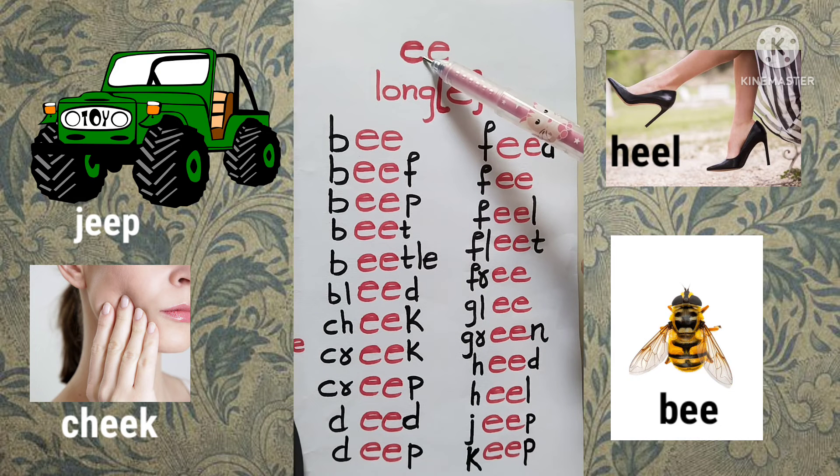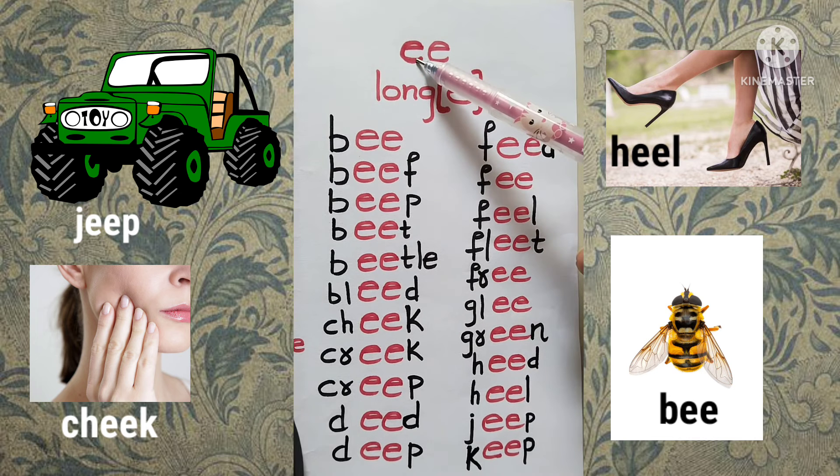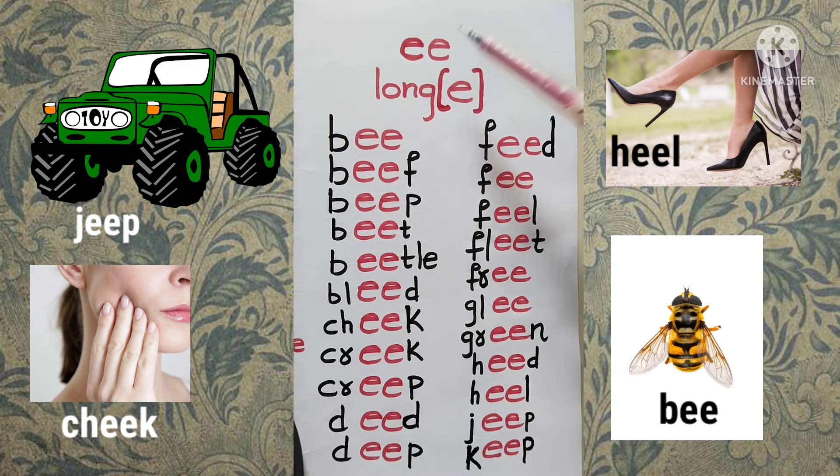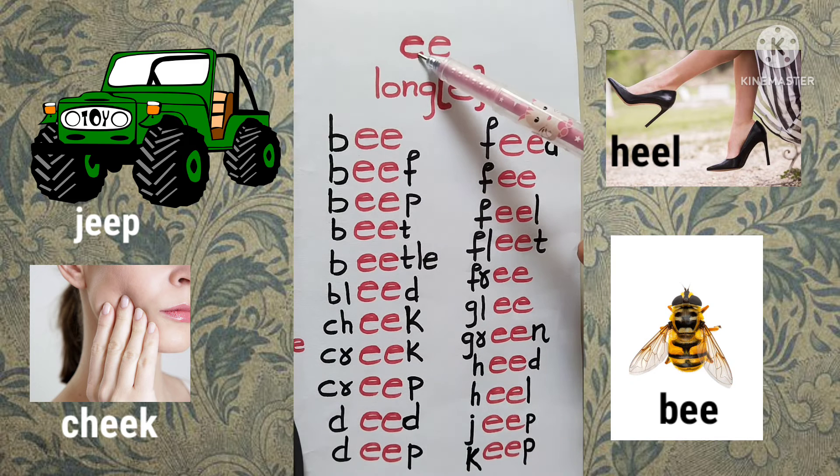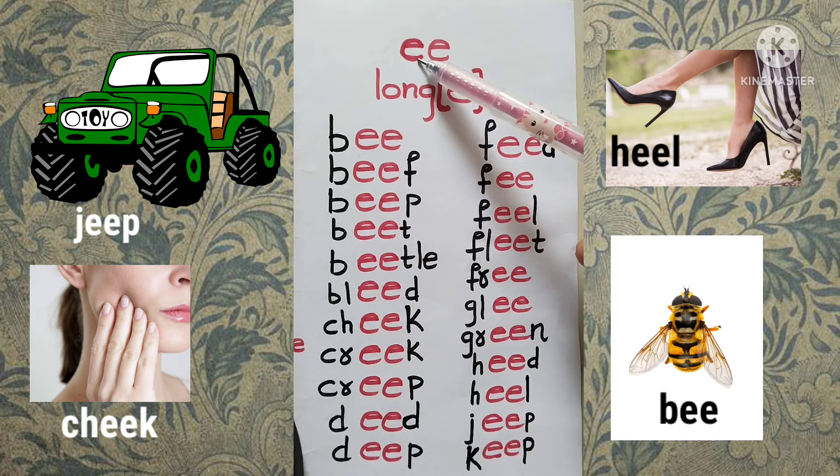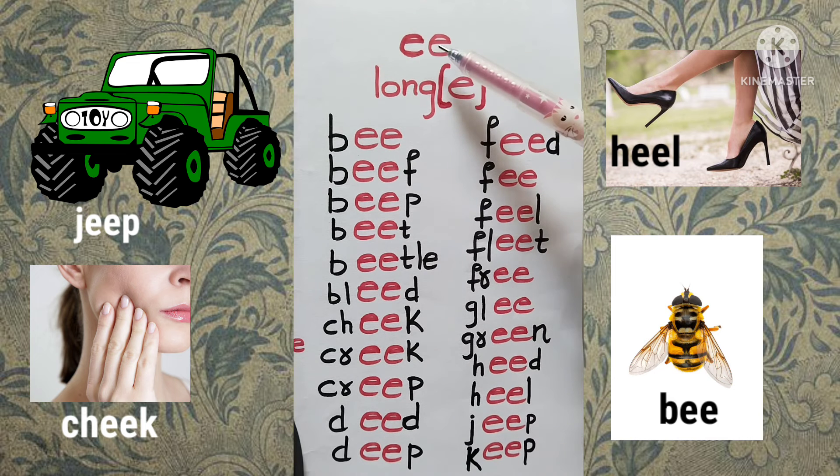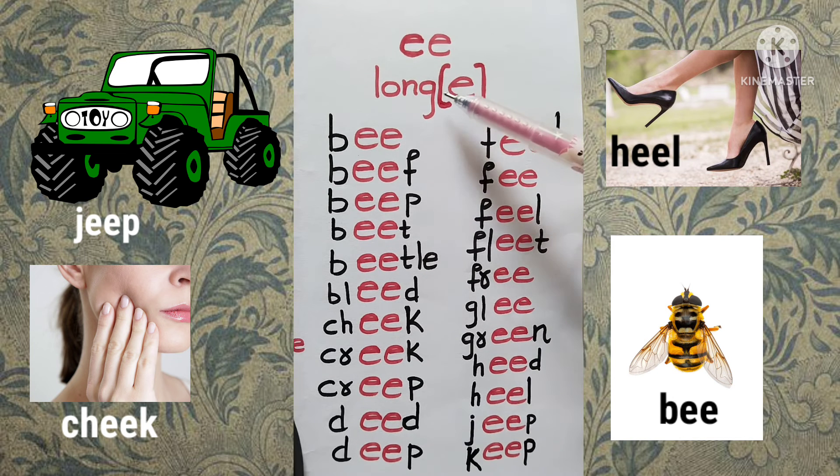Long vowel rule: when two vowels go walking, the first one does the talking - it says its name. The second vowel does the walking, that means it is silent. The name of the letter is E and it is silent. So this is the long vowel rule. The EE together has a long E sound.